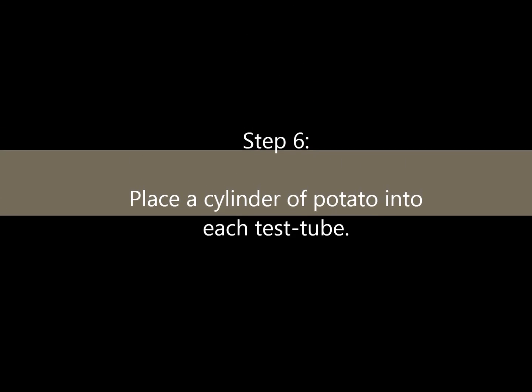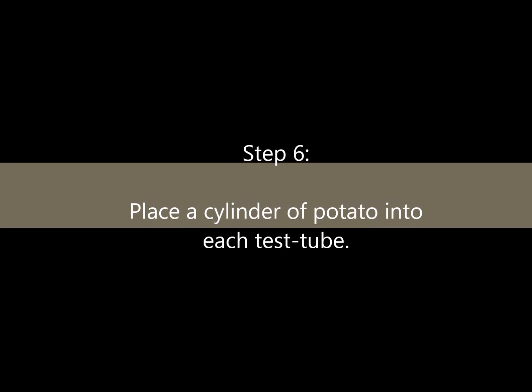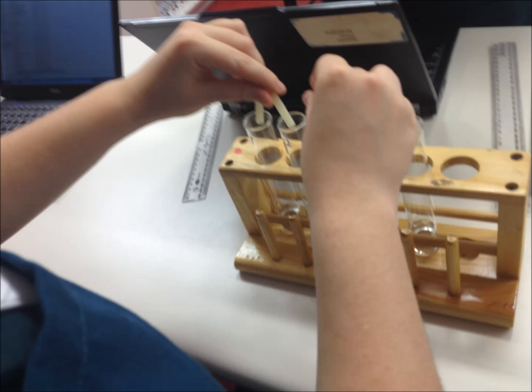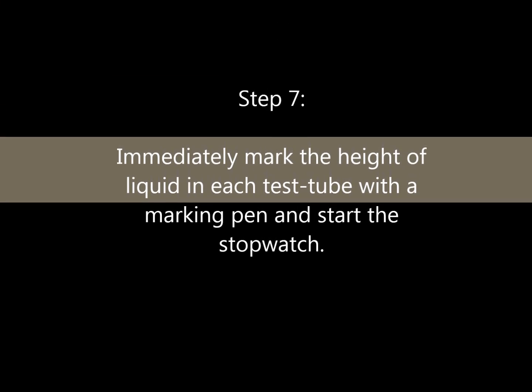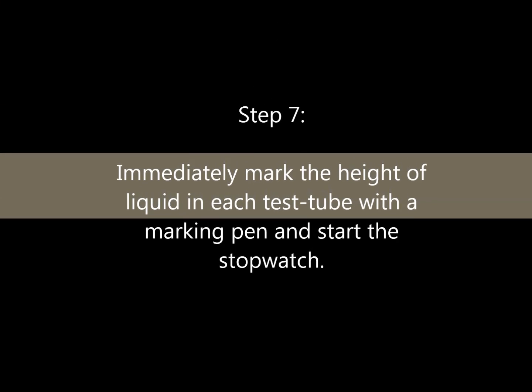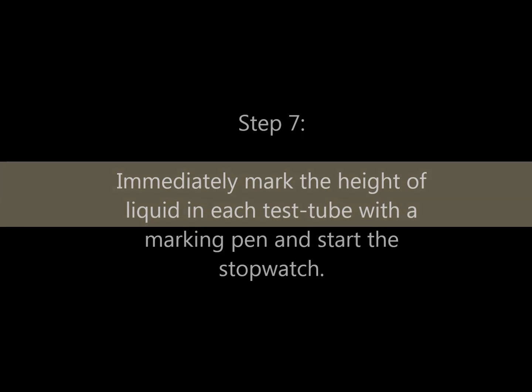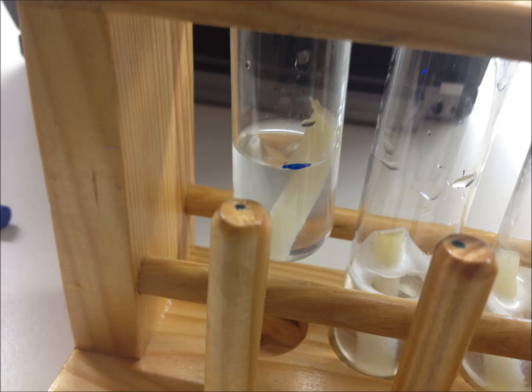Step 6: Place a cylinder of potato into each test tube. Step 7: Immediately mark the height of liquid in each test tube with a marking pen and start the stopwatch.